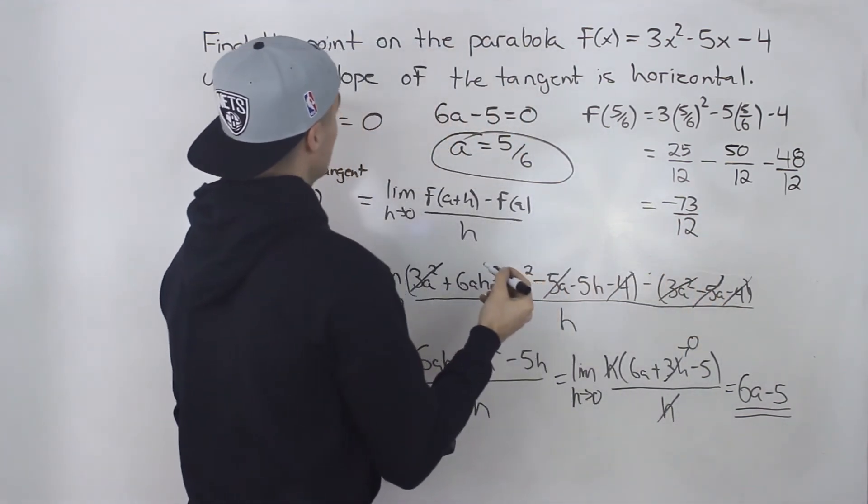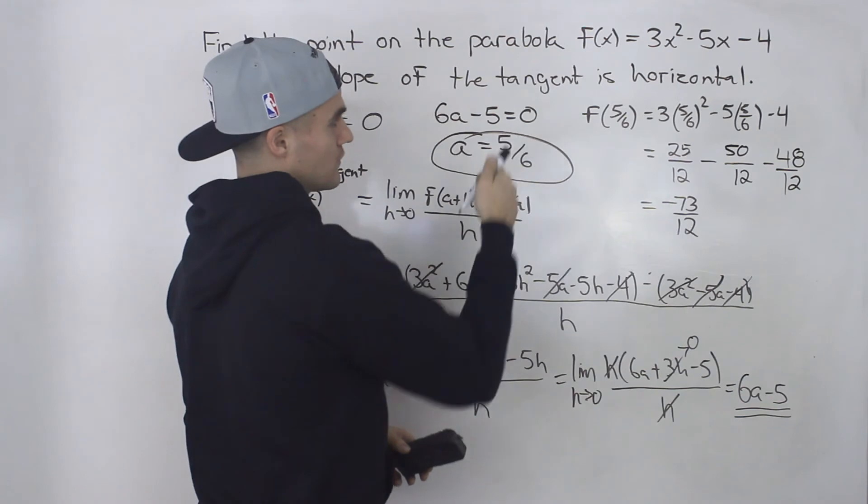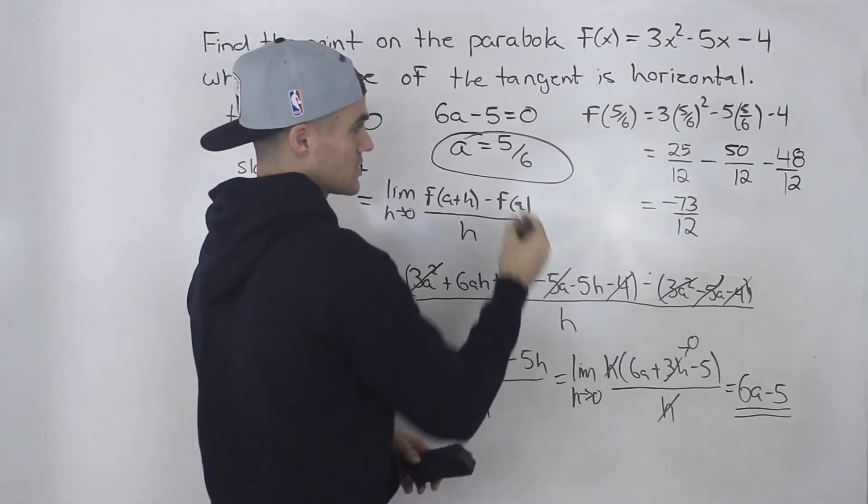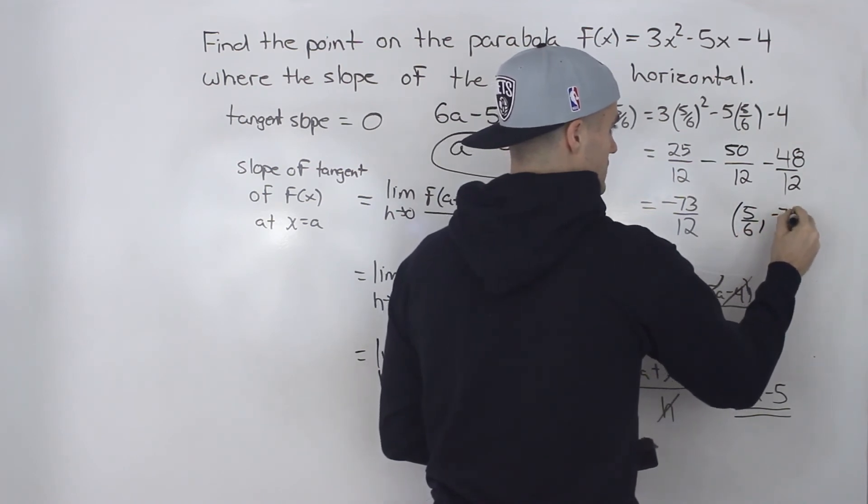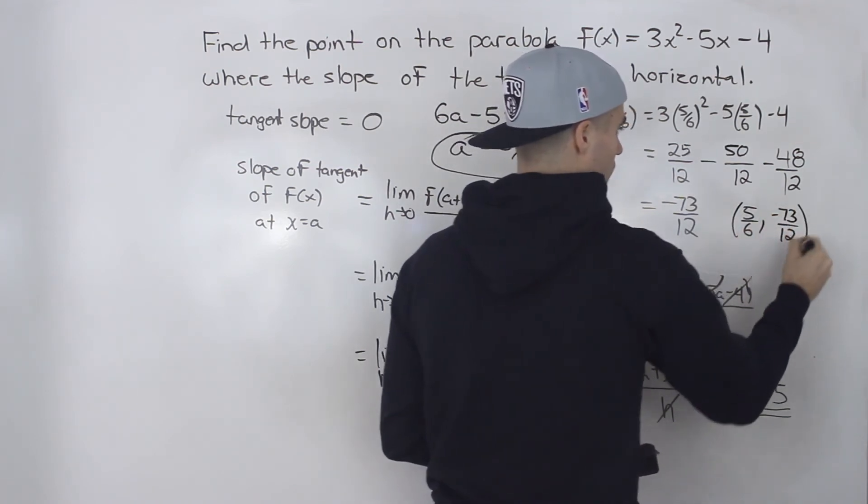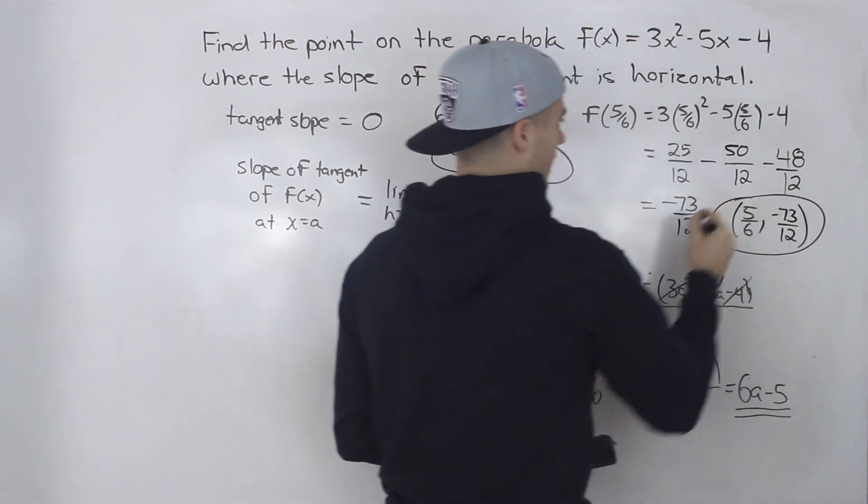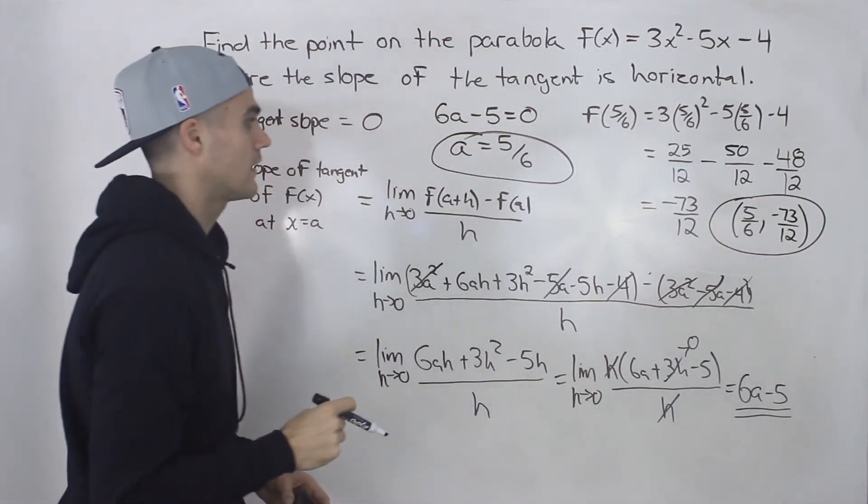So at what point on this function is the tangent going to be horizontal? Well, basically at 5/6 and -73/12. So that is the final answer.